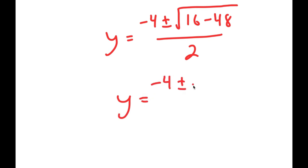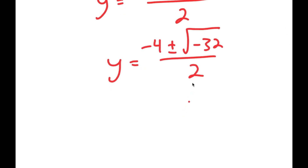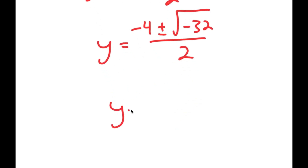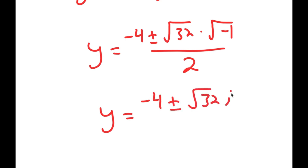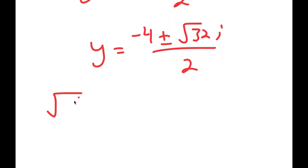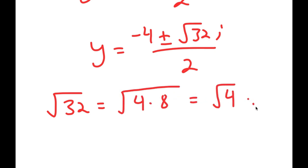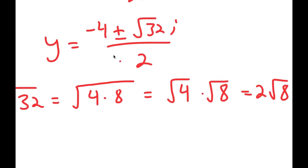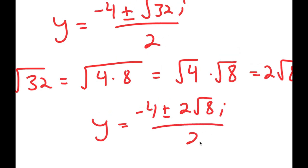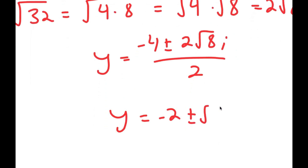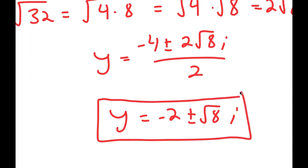This turns into y equals negative 4 plus or minus the square root of 16 minus 48 over 2, which equals negative 4 plus or minus the square root of negative 32 over 2. The square root of negative 32 can be rewritten as the square root of 32 times the square root of negative 1. The square root of negative 1 equals i, the imaginary number. The square root of 32 equals 2 times the square root of 8, so y equals negative 2 plus or minus the square root of 8 times i. These are two more solutions of y.